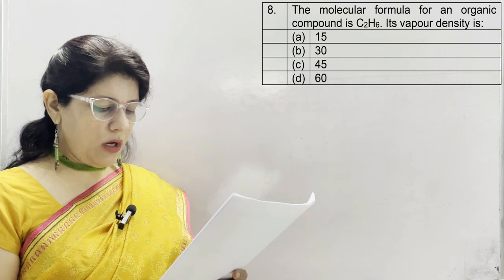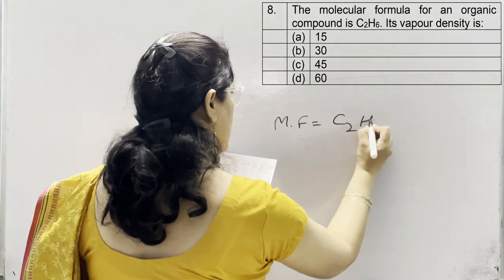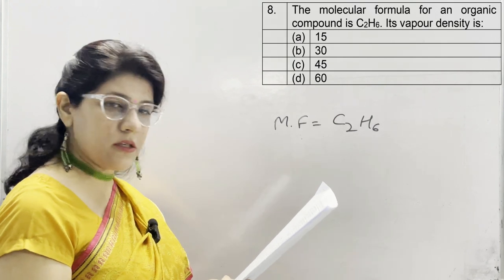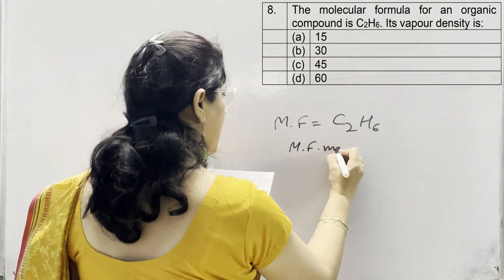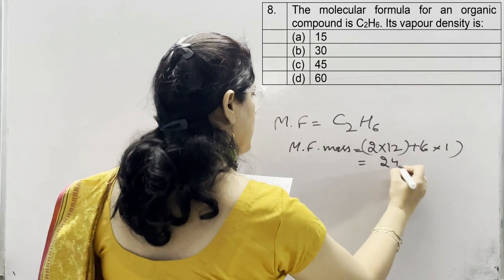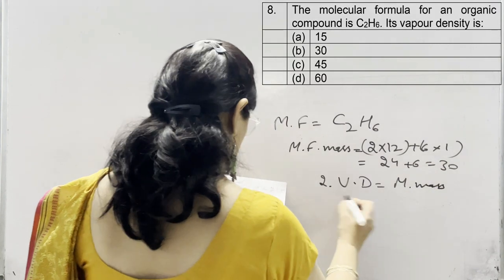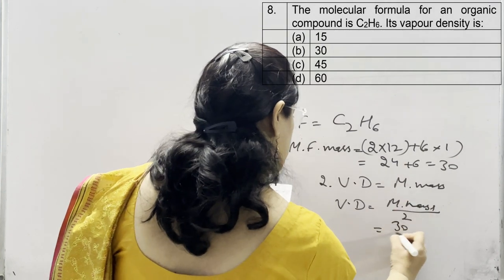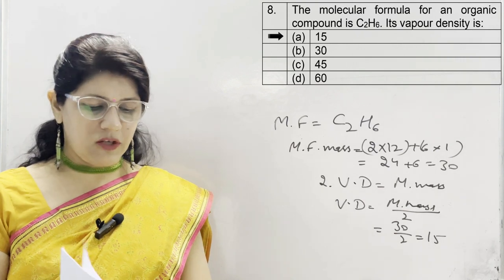In question 8, the molecular formula of an organic compound is C₂H₆. We need to find its vapour density. We know that molecular formula mass = 2 × vapour density. The molecular formula mass = 2×12 + 6×1 = 24 + 6 = 30 amu. Therefore vapour density = 30 ÷ 2 = 15. The correct option is A, which is 15. Other options — 30, 45, 60 — are incorrect.